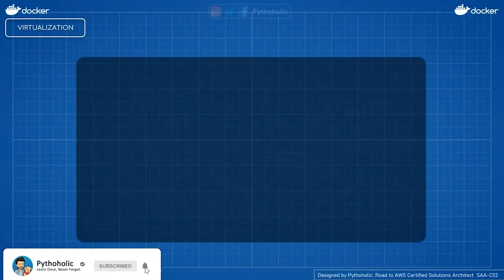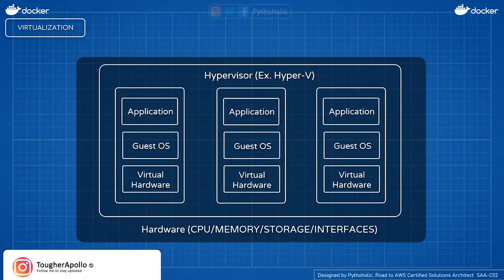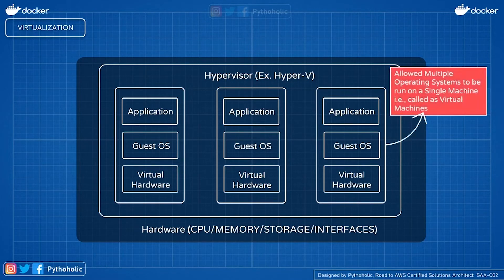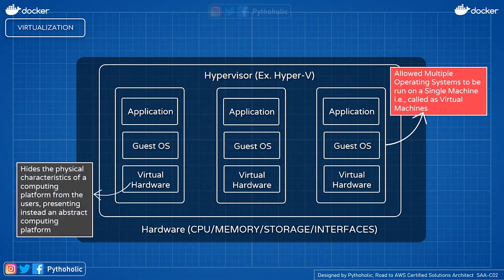If you search for virtual machines or virtualization, you'll see a common diagram that encapsulates the basic idea. You have the hardware — your resource powerhouse — on which a hypervisor sits. The hypervisor abstracts the hardware, on top of which you host your guest operating system and install your applications. The hypervisor creates a virtual environment, meaning you're not using the physical hardware directly but an abstraction of it.